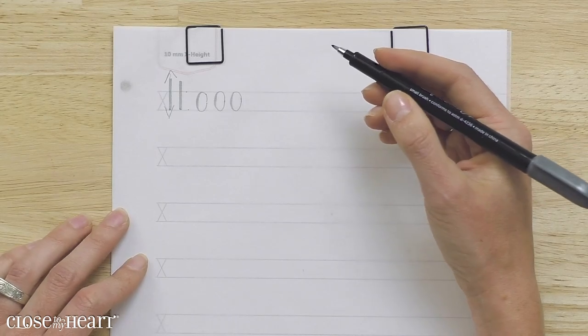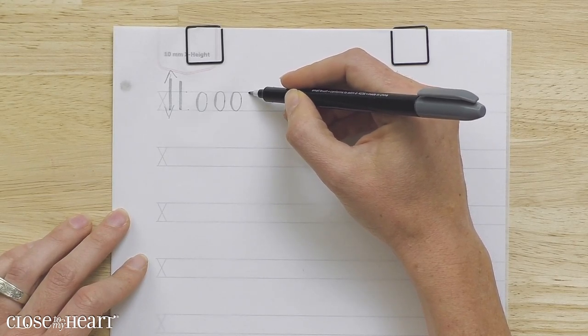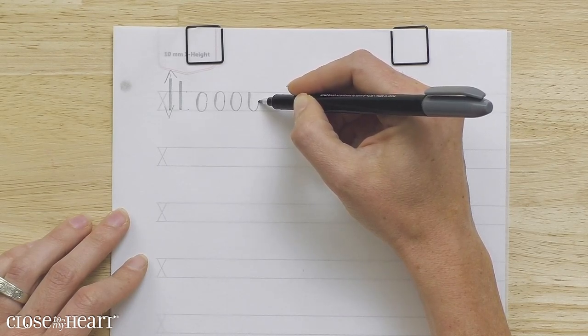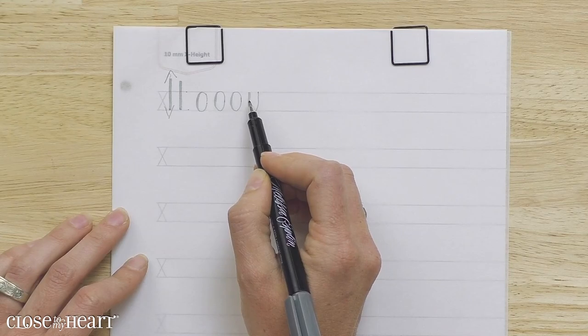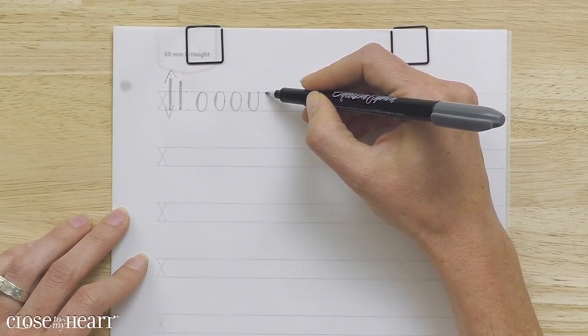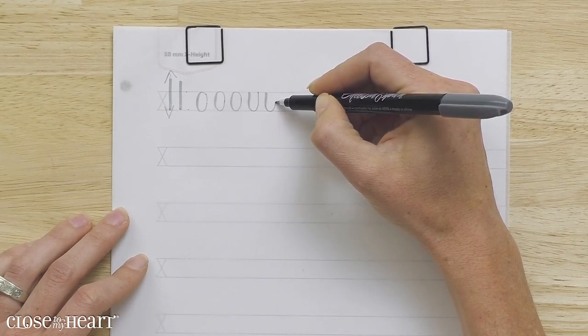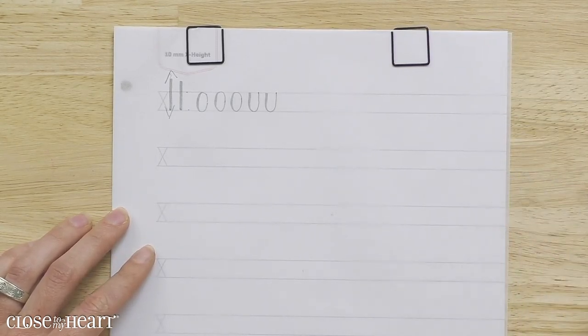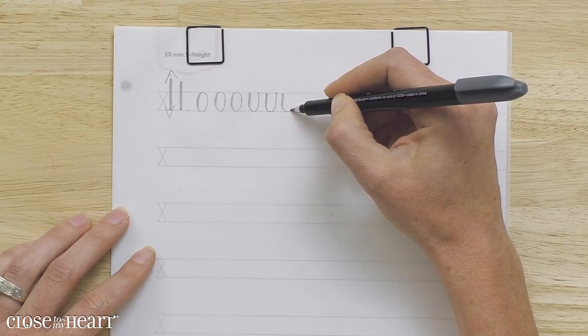The next stroke that we're going to do is the underturn. This starts at the top line with a firmly planted brush. We apply pressure, and then just after that nine o'clock mark, we release pressure to a six o'clock mark, and we're at a hairline all the way back up. So you see how we are using this oval stroke, but we're just opening it up at the top. Let's do that again. Start at the waistline, apply pressure, release at nine o'clock, have a hairline at six o'clock, and continue all the way back up to the top line. One more time for good measure. Start at the top, apply pressure, release, and come back up.